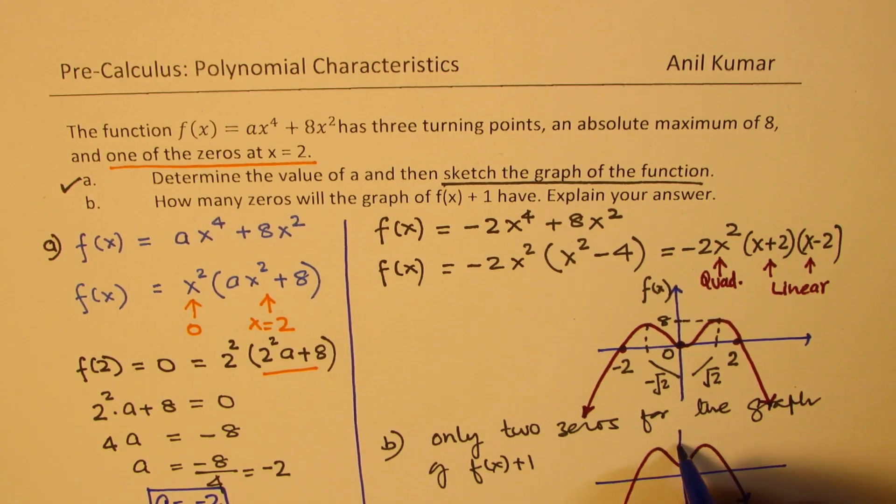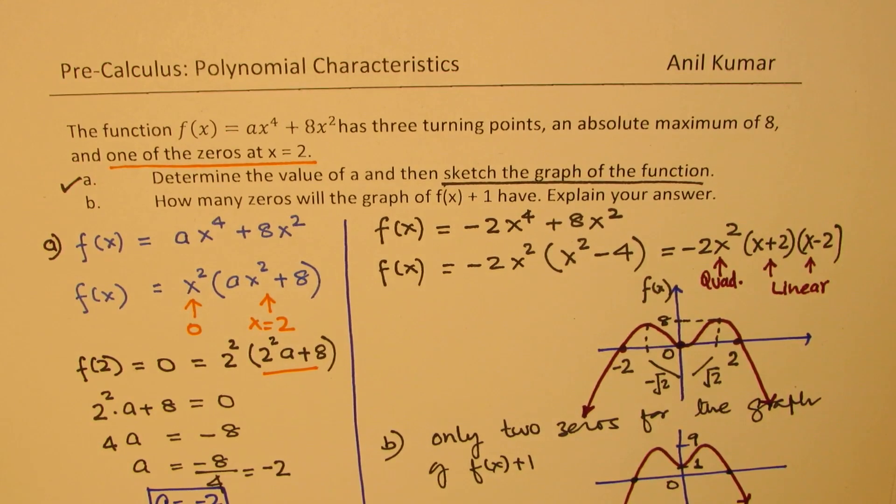The maximum value will still be there at one more than 8, which will be at 9. This value here will be at 1. You push it up by one unit, so we have only two zeros as you can see. I hope with this, the concept about polynomial characteristics are kind of clear, and you now understand how to solve such a question.